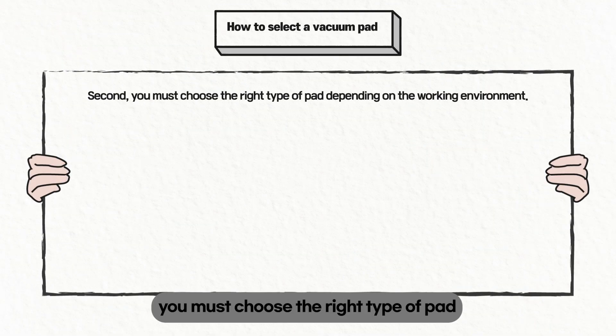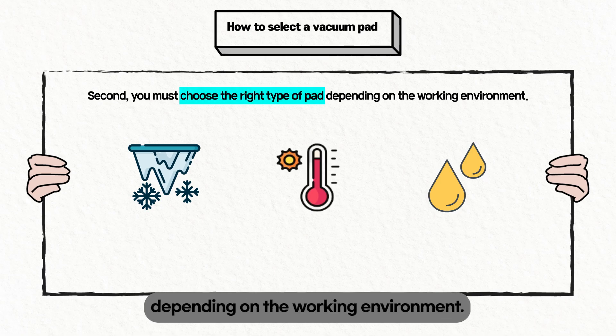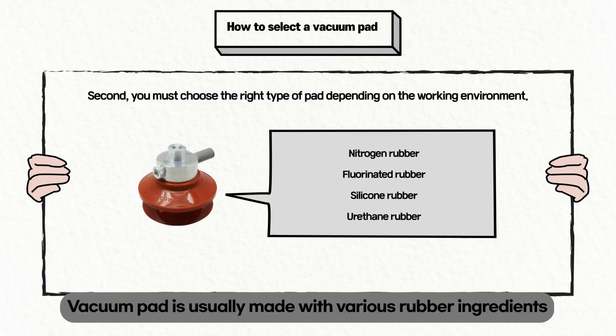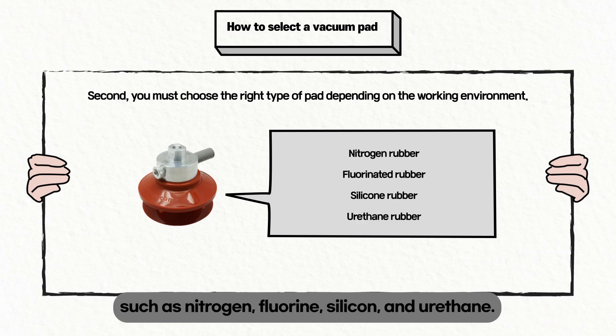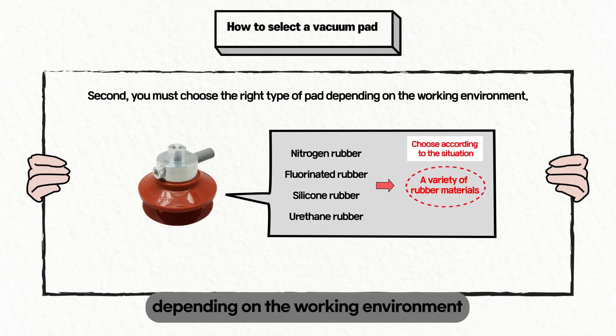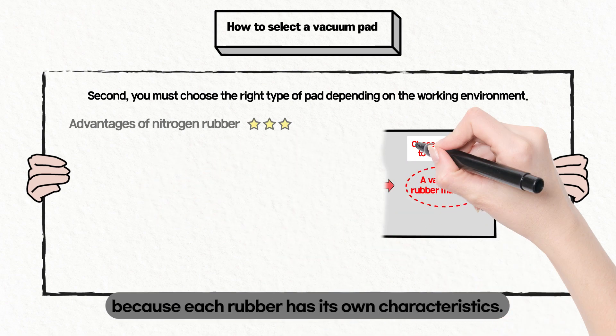Second, you must choose the right type of pad depending on the working environment. Vacuum pads are usually made with various rubber ingredients such as nitrogen, fluorine, silicon, and urethane. You must be able to choose the right type of pad depending on the working environment because each rubber has its own characteristics.